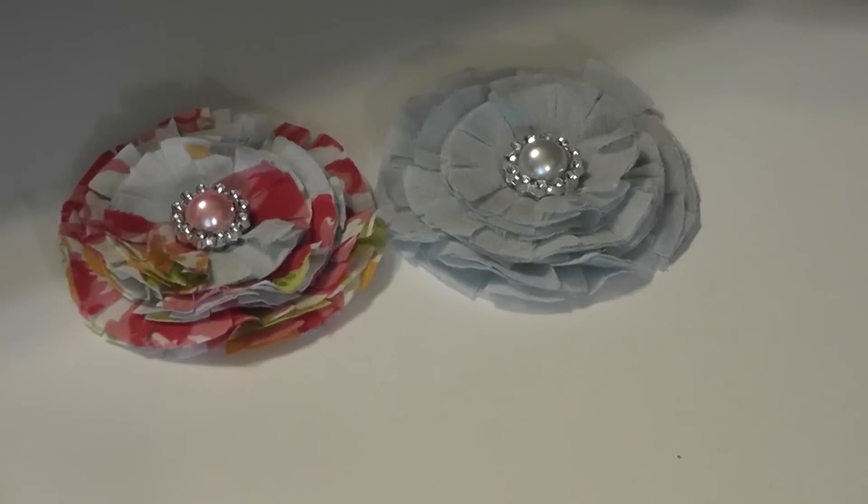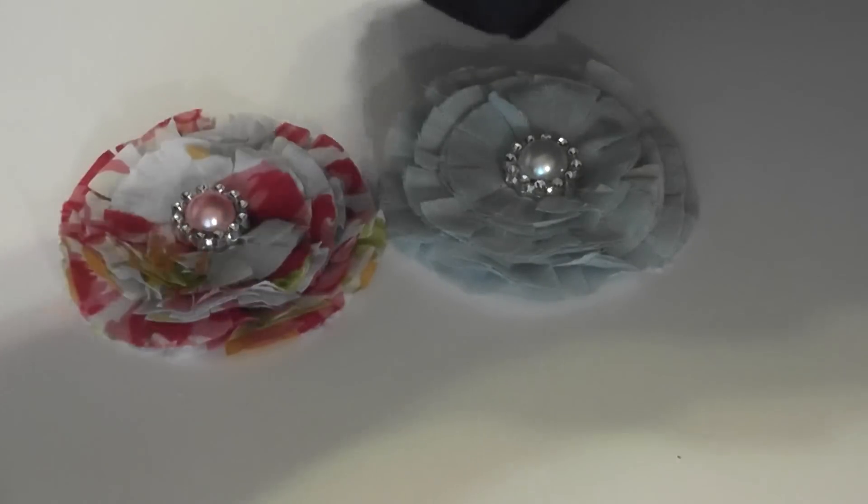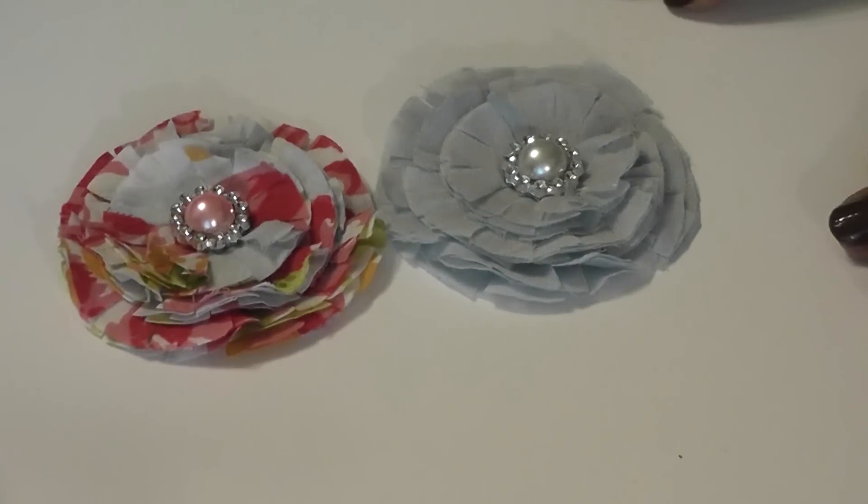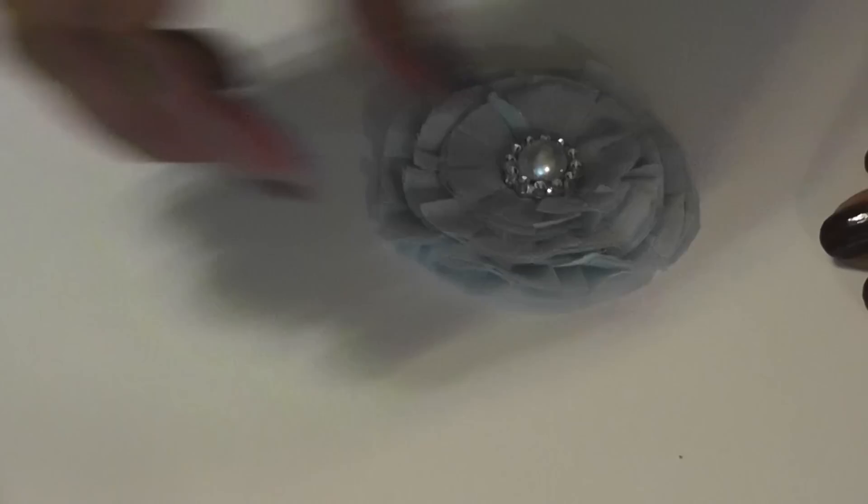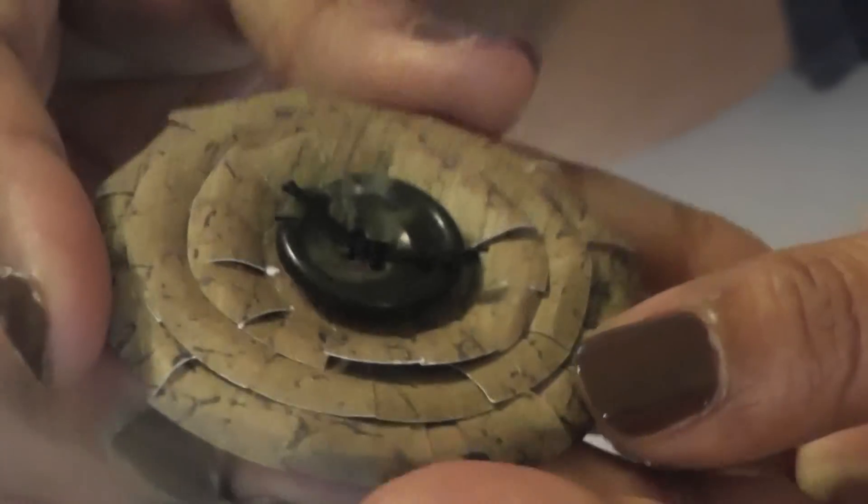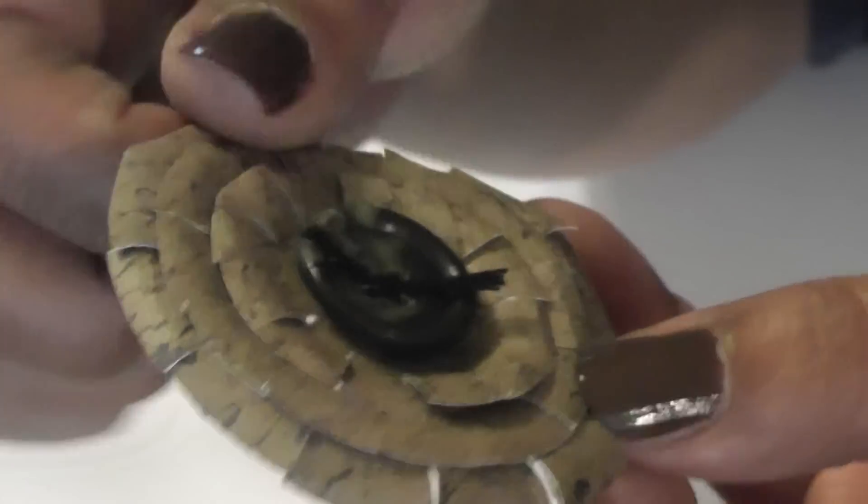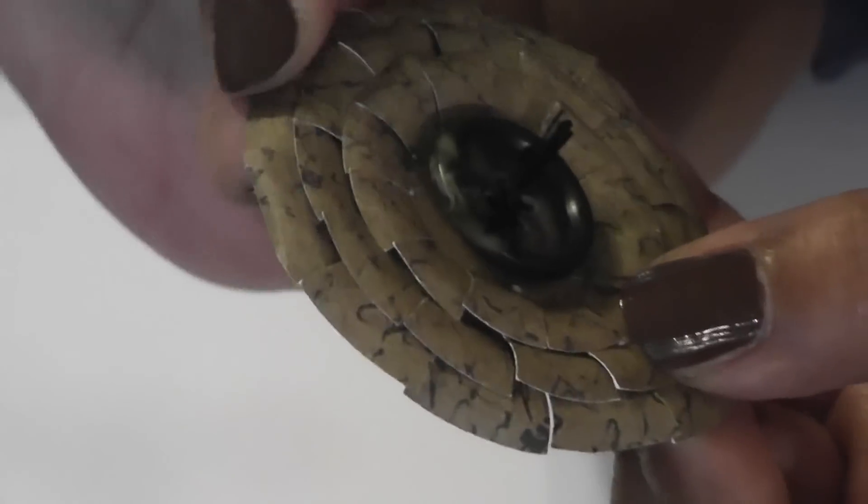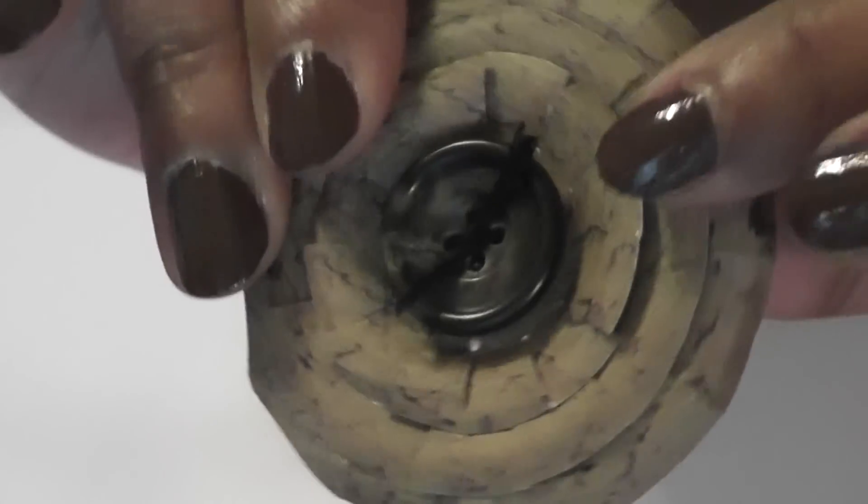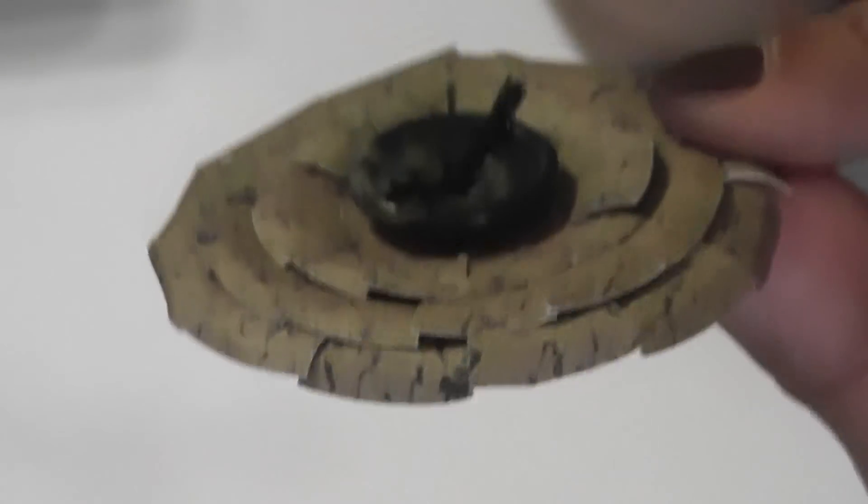So I'm going to show you a couple of flowers that I made. Your flowers are going to differ in look depending on the material that you use. First I did paper. So here's like a little grungy flower. I used one of each and I used a skewer to fold the petals down. I just added a button. So that's a paper one right there.